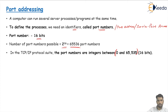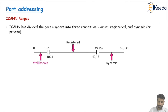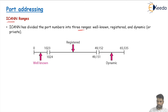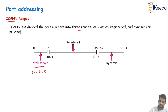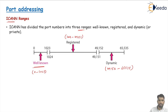This range from 0 to 65,535 is managed by ICANN — an organization responsible for the registration and management of port numbers. ICANN has divided these port numbers into three ranges: the first is called well-known, the second is called registered, and the third is called dynamic, also referred to as private. The ranges are: 0 to 1023 (well-known), 1024 to 49151 (registered), and 49152 to 65535 (dynamic or private).